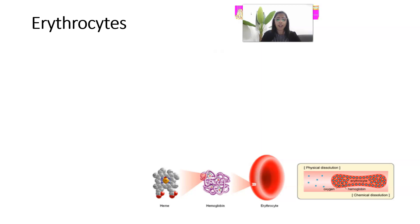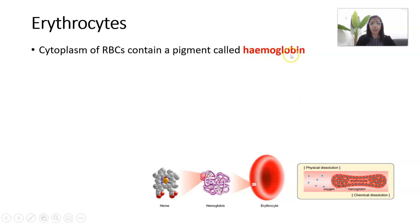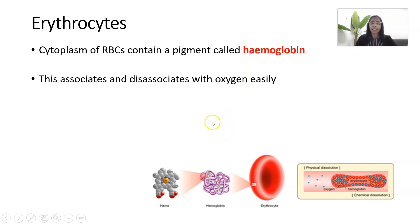The main function of red blood cells is to carry both oxygen and carbon dioxide — not just oxygen as commonly thought. Erythrocytes can do this so efficiently because they contain a respiratory pigment known as hemoglobin. Hemoglobin has the ability to associate — combine with — and dissociate — release — oxygen very easily. In the lungs where oxygen concentration is high, hemoglobin associates with oxygen quickly. In areas such as respiring muscle tissue with high oxygen demand, hemoglobin dissociates and offloads oxygen to those cells.